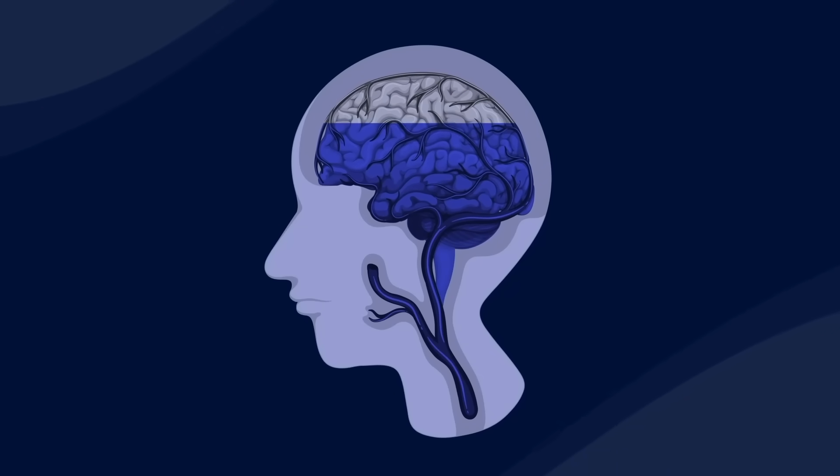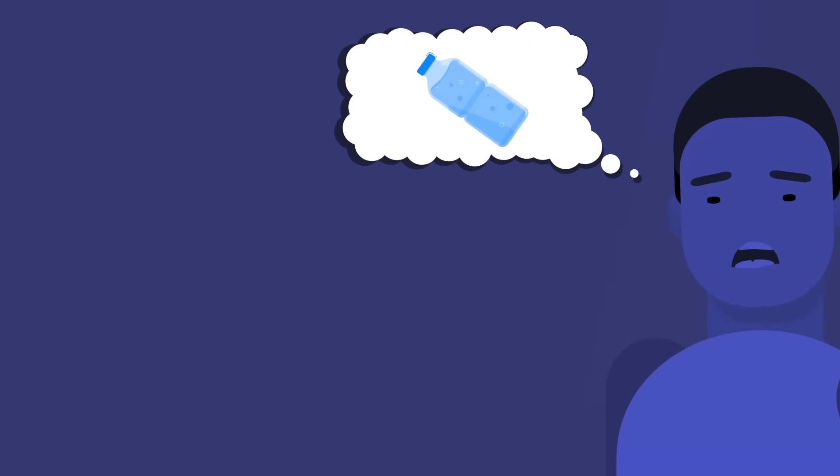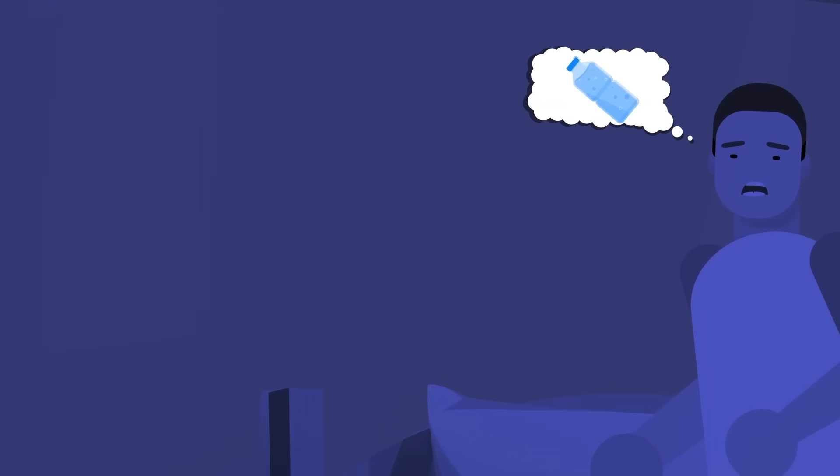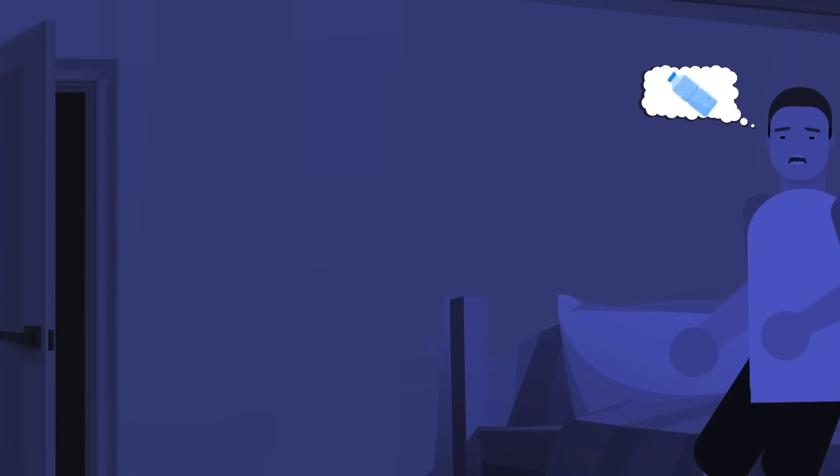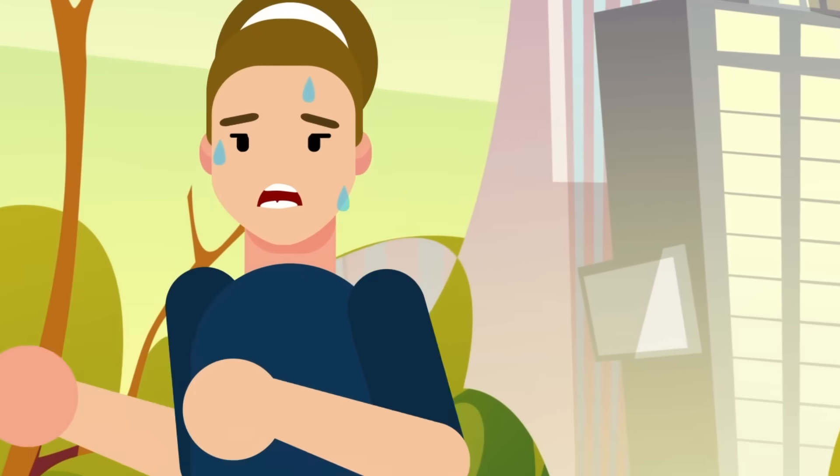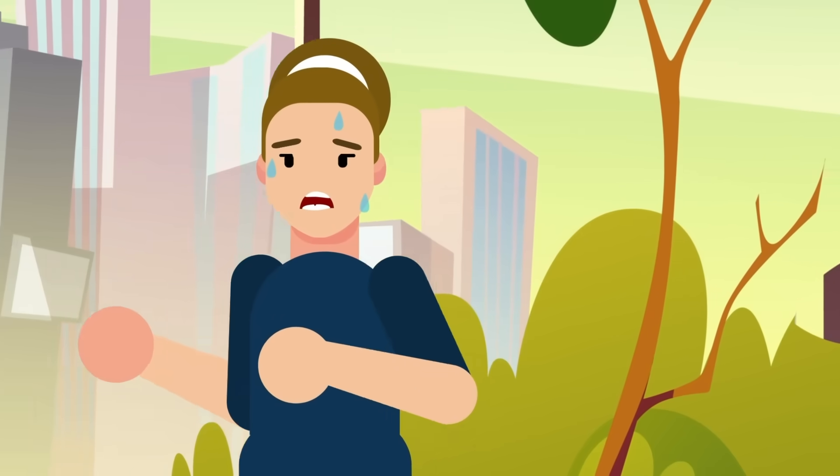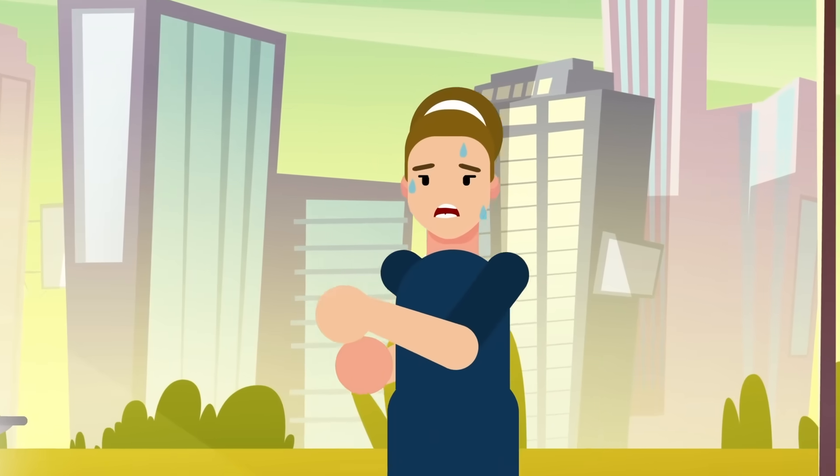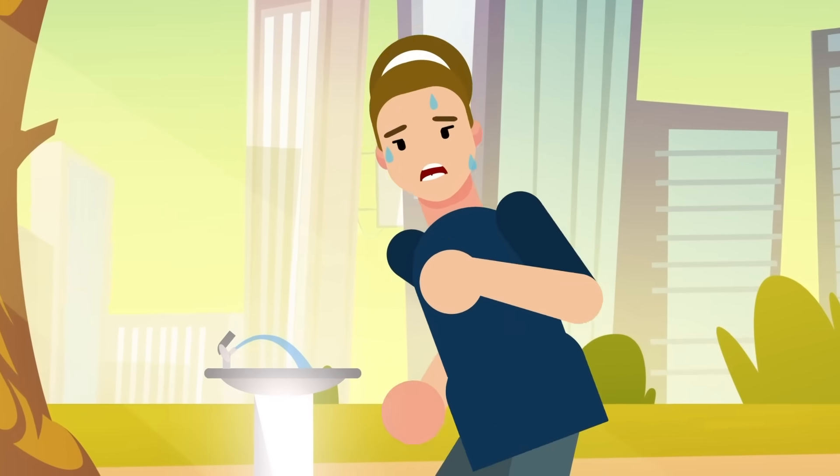As he cools down and rehydrates, Alex confronts another common challenge associated with MDMA use: dehydration and electrolyte imbalance. Despite the cooler environment, Alex finds himself incredibly thirsty, a symptom often overlooked in the midst of MDMA's more immediate effects. Research explains that MDMA can significantly increase the risk of dehydration and electrolyte imbalance, particularly in settings like music festivals where dancing and high temperatures compound the issue.